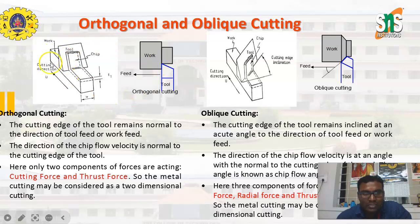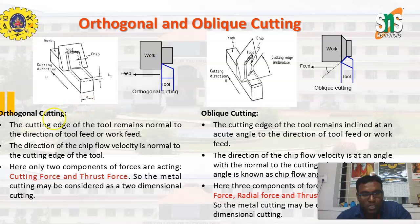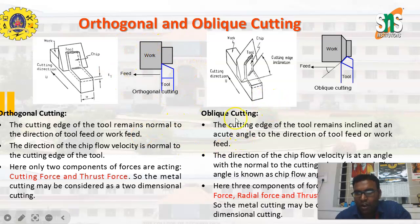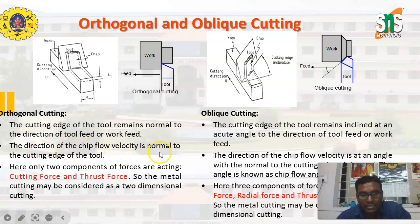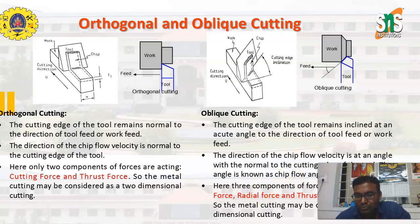In orthogonal cutting, the cutting edge of the tool remains normal — that is, 90 degrees — to the direction of tool feed or work feed, as shown in the figure. Whereas in oblique cutting, the cutting edge of the tool remains inclined at an acute angle to the direction of tool feed or work feed. In orthogonal cutting, the direction of chip flow velocity is normal to the cutting edge of the tool. In oblique cutting, the direction of chip flow velocity is at an angle with the normal to the cutting edge, also known as the chip flow angle.